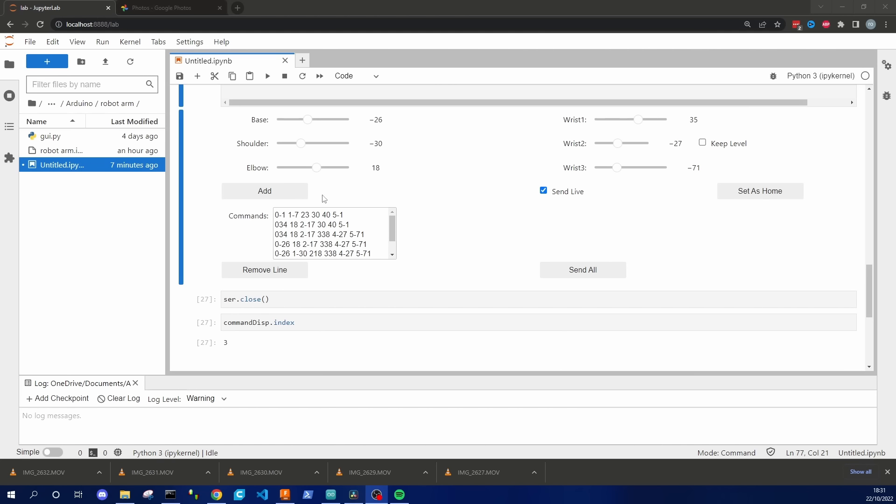I've also got it set up so that I can move the joints to various positions. Click on add here and it'll add it to a list of commands which I can then choose to send to the robot in order.